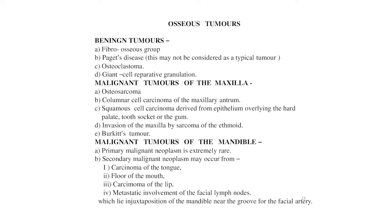Osseous tumors of the jaw are classified as benign and malignant. Benign tumors include fibrous dysplasia, Paget's disease, osteoclastoma, and giant cell reparative granuloma. Malignant tumors of the maxilla include osteosarcoma, columnar cell carcinoma of the maxilla, squamous cell carcinoma derived from epithelium overlying the hard palate or tooth socket or gum, and invasion of the maxilla by sarcoma of the ethmoid and Burkitt's tumor.